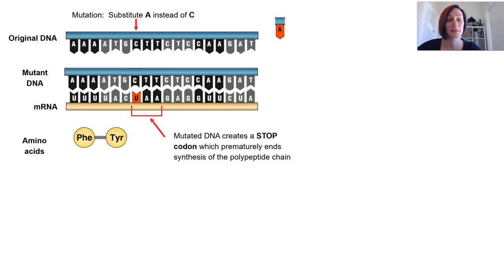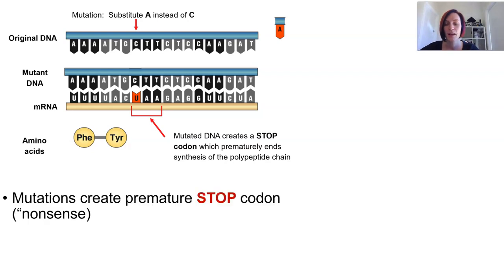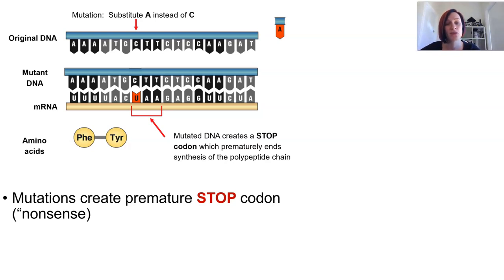If a point mutation creates a premature stop codon, then no more amino acids will be produced following that point on the polypeptide chain, stopping that entire sequence from being produced. This is called a nonsense mutation.